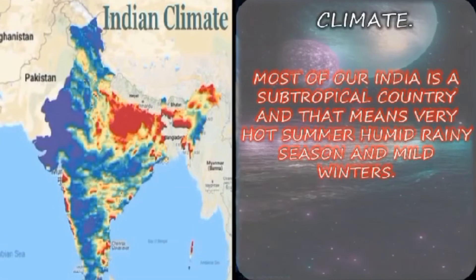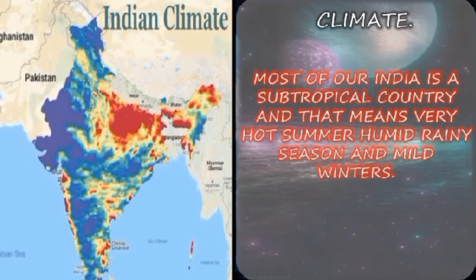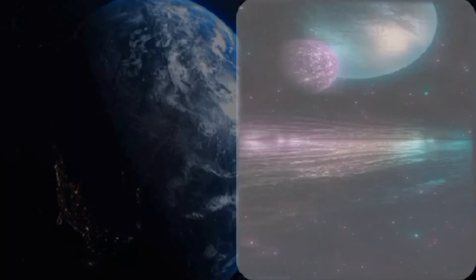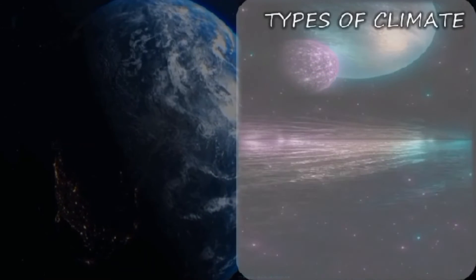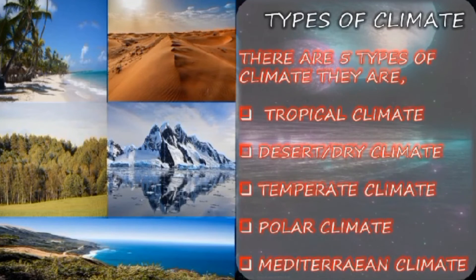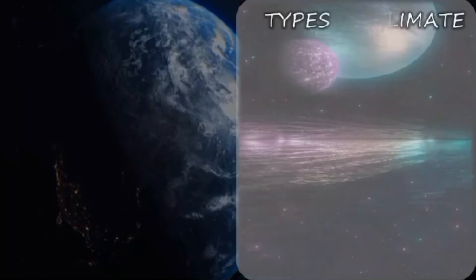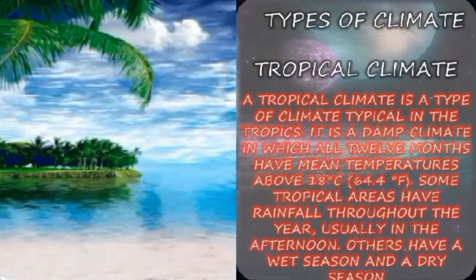Most of India is a subtropical country, which means very hot summers, a humid rainy season, and mild winters. Types of climate include tropical climate, desert climate, temperate climate, and Mediterranean climate. We are going to see each climate type. Tropical climate is where all 12 months have temperatures above 18 degrees Celsius (64°F). The Amazon rainforest and Indonesia are examples of areas that enjoy tropical climate. Tropical climate is one of the major climate groups in the climate classification.